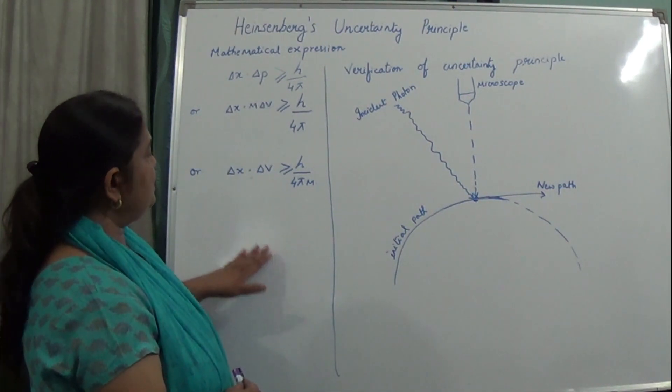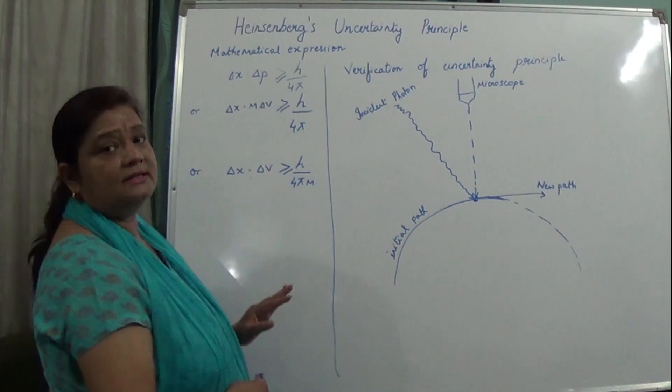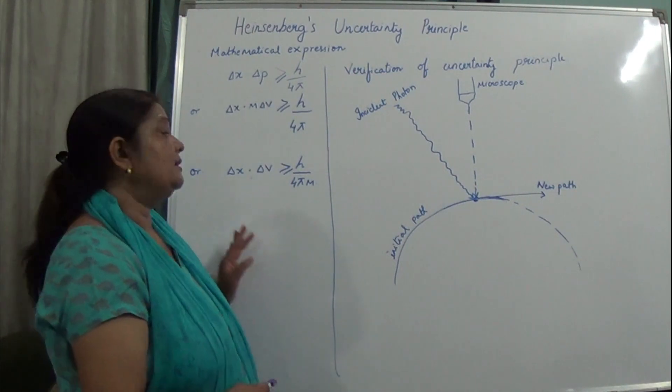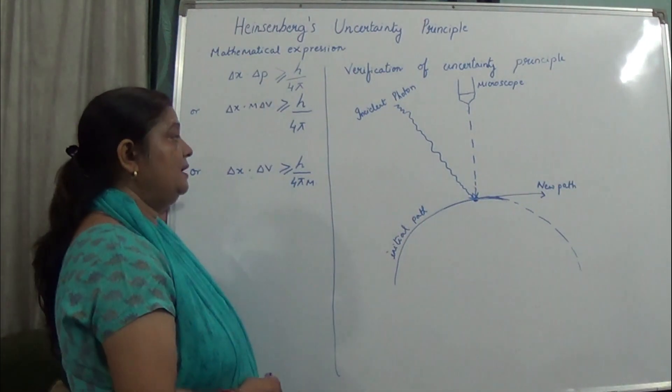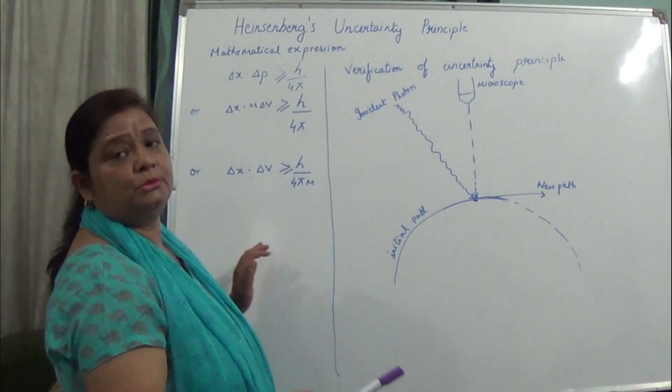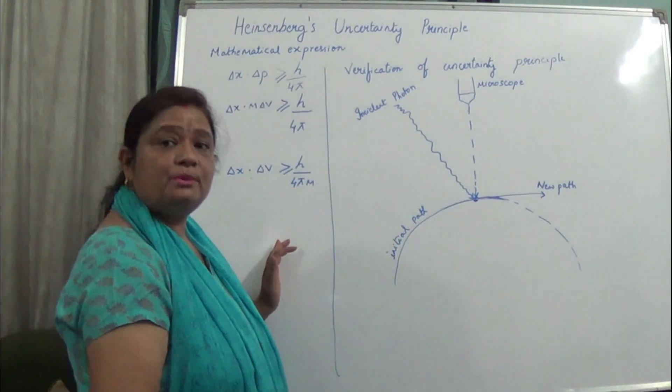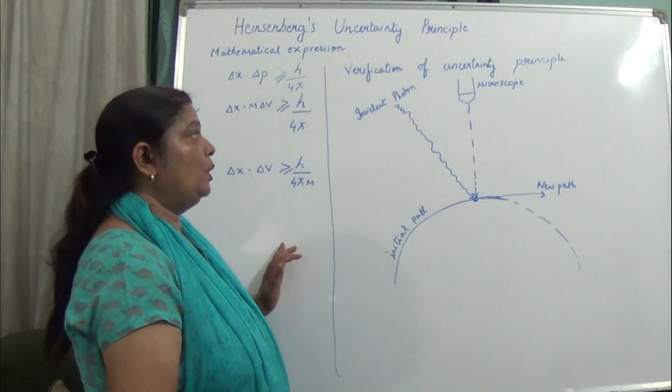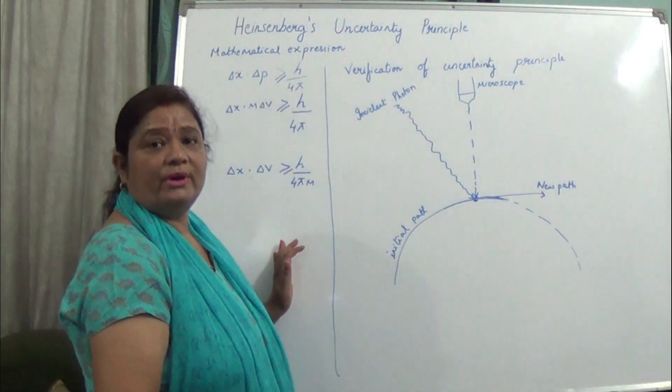Now, why does this uncertainty occur? It occurs due to the dual nature of radiation.